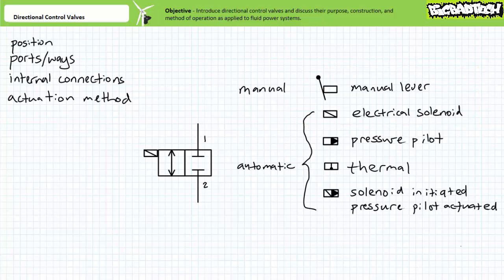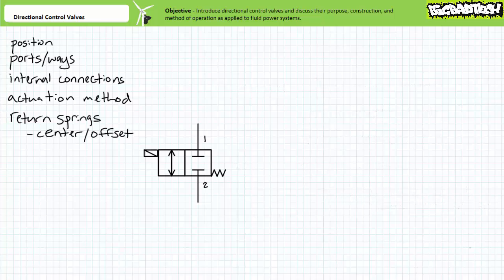A manual lever-operated valve requires an operator to physically push or pull the valve into a new position. A solenoid-operated valve uses an electrical solenoid, a type of linear electrical actuator, to physically push or pull the valve into a new position. We'll deal with some of the electrical characteristics of solenoid-operated valves in later lectures. Valves use return springs that either offset or center a valve to an initial deactivated position. This example valve is spring offset into the normally closed position such that the valve does not ordinarily conduct fluid.